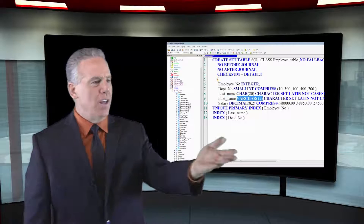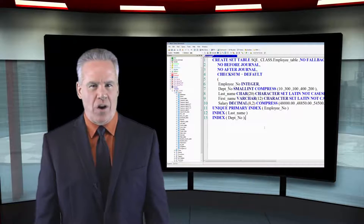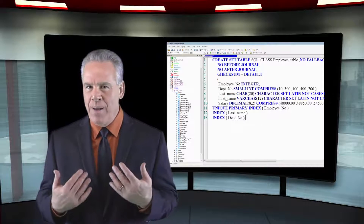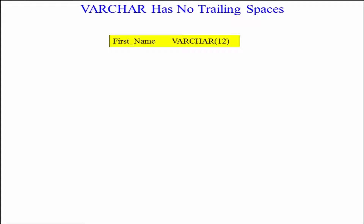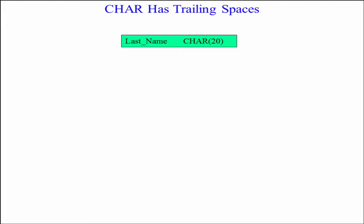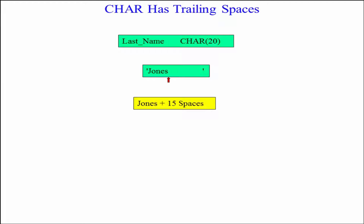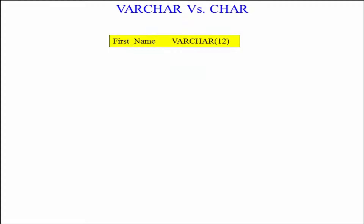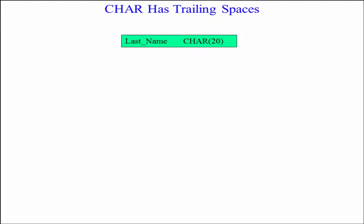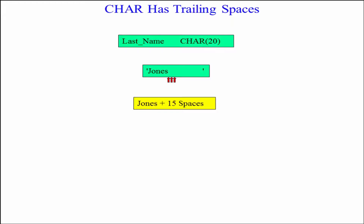In this example, first name is a VARCHAR(12). So 'Tom' is three letters — it's going to take just three bytes, with no spaces at the end. But if I have a last name like 'Jones' and it's CHAR(20), it's 'Jones' and 15 spaces. In a VARCHAR data type there are no trailing spaces, but in a CHAR data type they pad spaces to fill the full length of that data type.